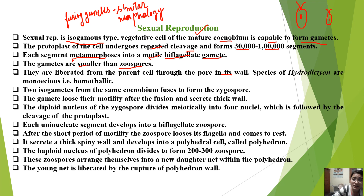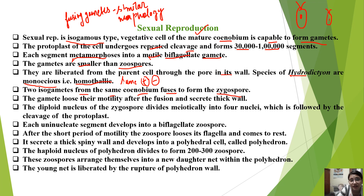Hydrodictyon species are monoecious, that is homothallic — meaning both male and female gametes are produced on the same coenobium. Two isogametes from the same coenobium fuse to form a zygospore. After fusion, the gametes lose their motility and secrete a thick wall. The diploid nucleus of the zygospore divides meiotically into four nuclei.